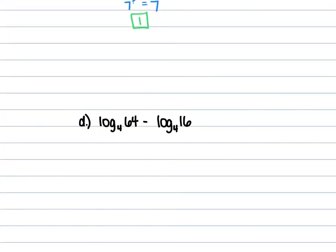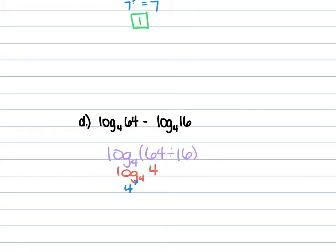For D, we have log₄ of 64 minus log₄ of 16. We're going to do log₄ of 64 divided by 16. 64 divided by 16 is 4, so this is log₄ of 4. And 4 to what power is equal to 4?